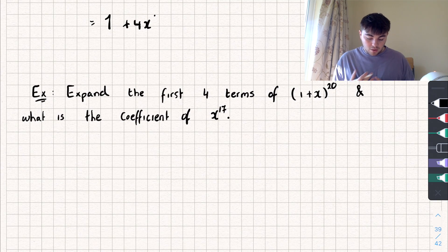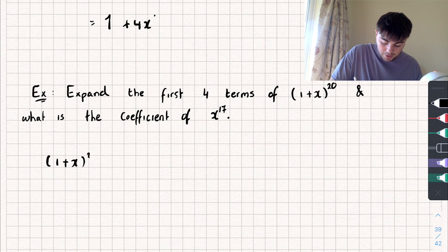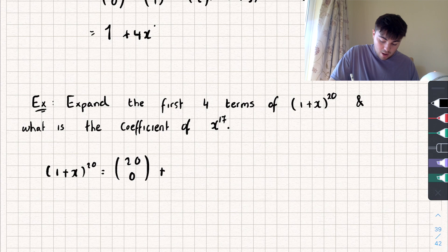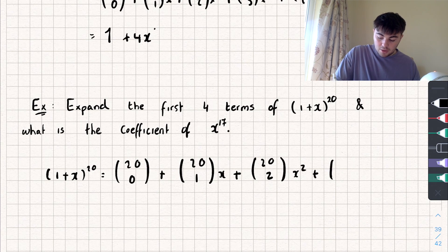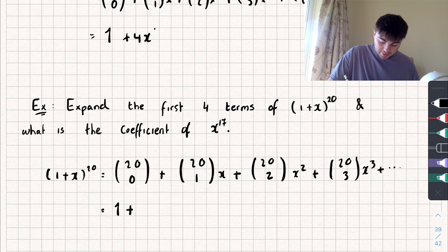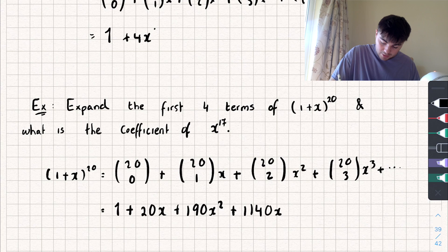This further example says: expand the first four terms of 1 plus x to the power of 20, and find the coefficient of x to the power of 17. We're going to use our n choose r notation rather than writing out the whole Pascal's triangle. The power of 1 plus x is the value of n, so we have: 20 choose 0, plus 20 choose 1 times x, plus 20 choose 2 times x squared, plus 20 choose 3 times x cubed. Working these out: 1 plus 20x plus 190x squared plus 1140x cubed, and so on.